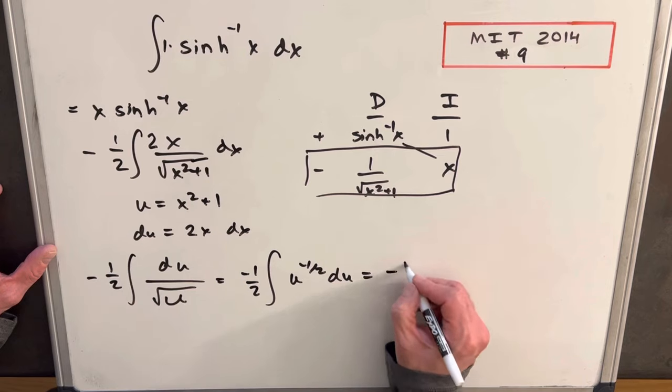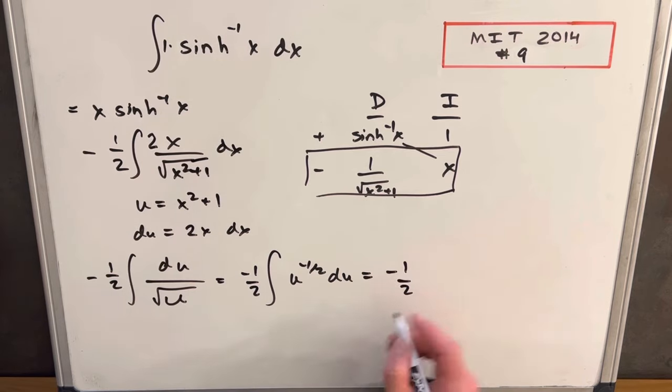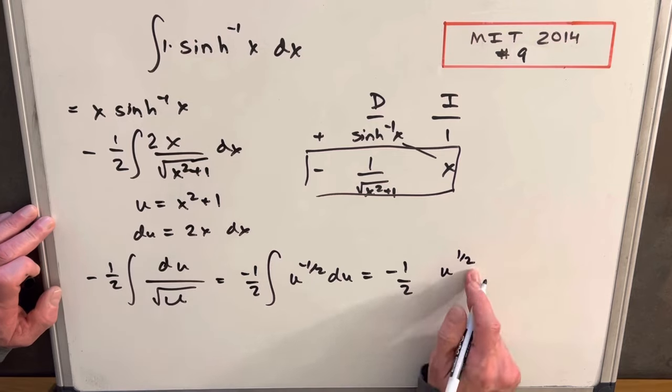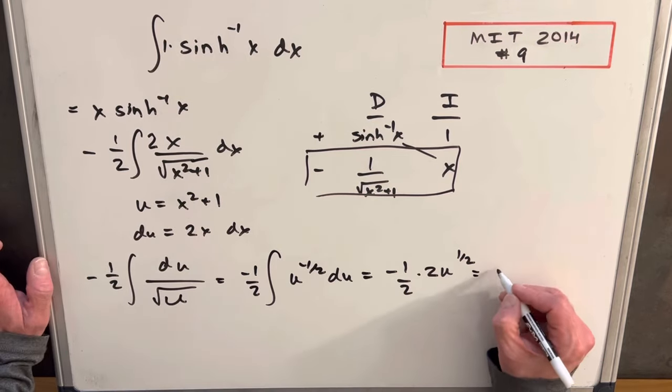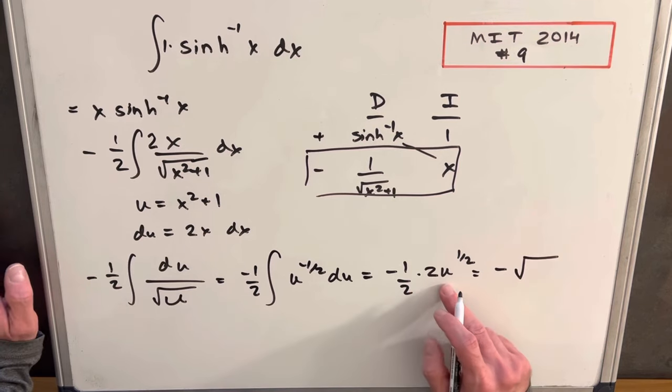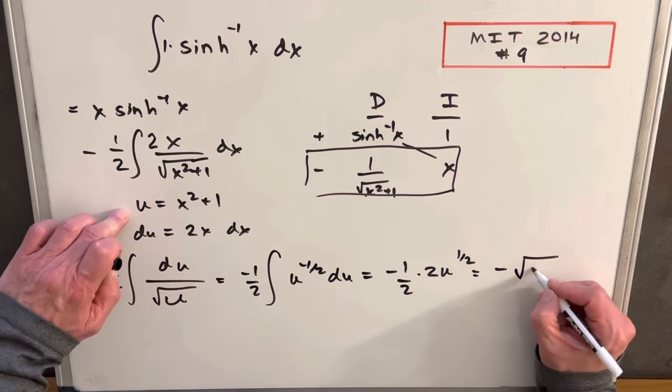Then we can integrate. Integral of this with the power rule is going to be just u to the one half, but take the reciprocal of a half and we're going to have to multiply by a two. So this thing is going to be minus square root of u, but u is x squared plus one.